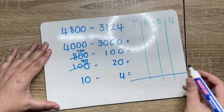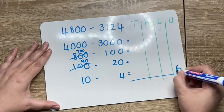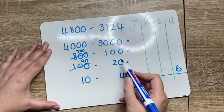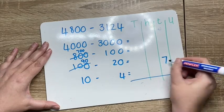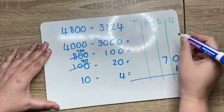Now it's easy. 10 minus 4 is 6. 90 minus 20 is 70. Remember to write it in the correct spots.